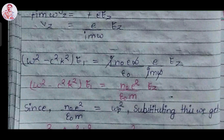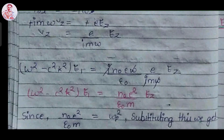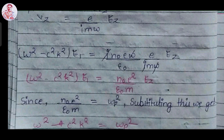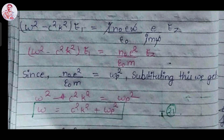Substituting the value of v_z into the main equation 19, we get (ω² − c²k²) E⃗ = iN₀eω/ε₀ · eE_z/(imω). After simplifying, this becomes (ω² − c²k²) E⃗ = N₀e²/(ε₀m) · E_z. Since N₀e²/(ε₀m) equals ωₚ², substituting this gives ω² = c²k² + ωₚ². Let's call this equation number 21.